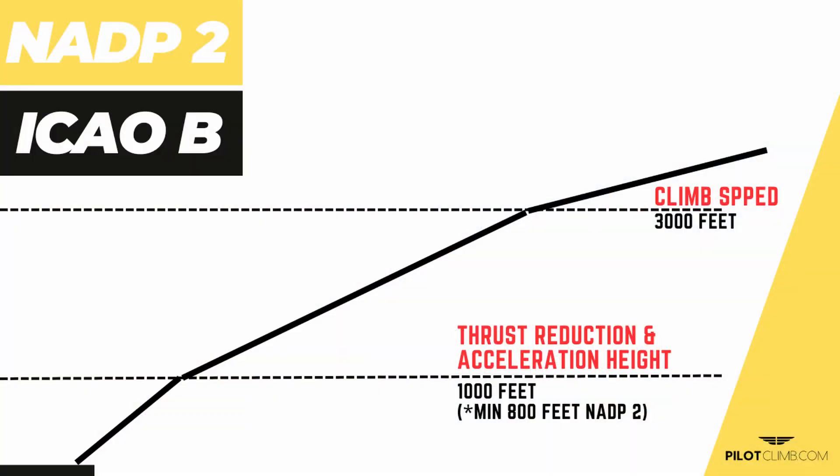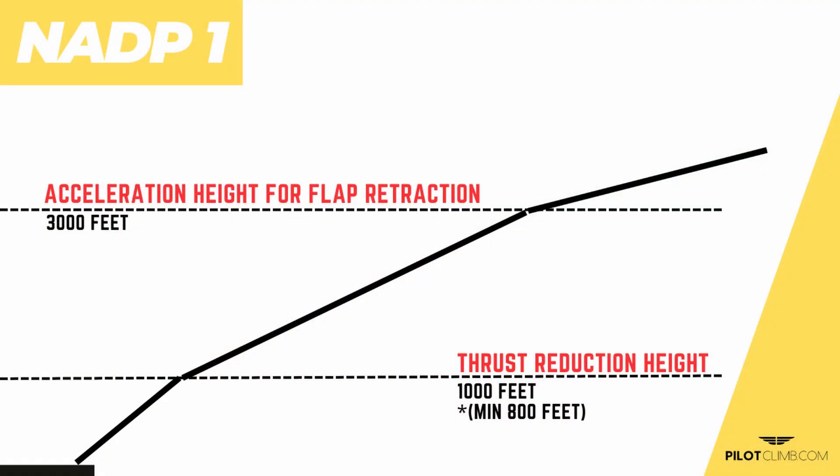To recap: Noise Abatement Procedure No. 2 and ICAO Bravo are equivalent — thrust reduction and acceleration height are both at 1000 feet, so at 1000 feet you reduce thrust, pitch down, accelerate, and retract the flaps. On Noise Abatement Departure Procedure No. 1, you reduce thrust from take-off to climb thrust at 1000 feet, but you keep climbing with that thrust until 3000 feet, and then at 3000 feet you pitch down and retract the flaps.